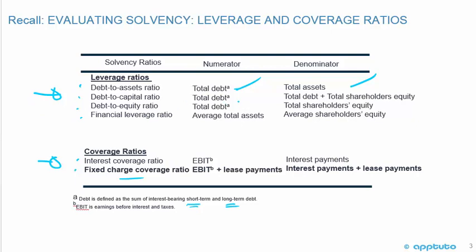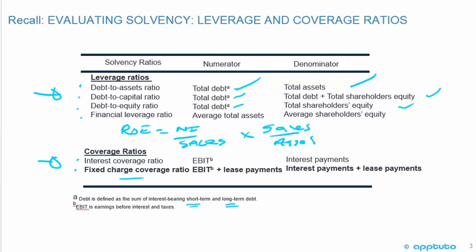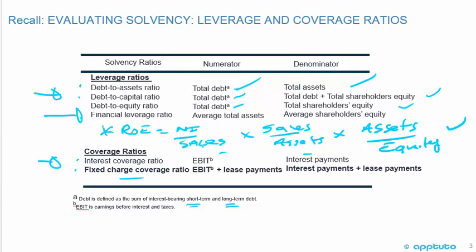For debt-to-capital, the numerator is total debt and the denominator is total debt plus total shareholders' equity. Debt-to-equity is simply total debt divided by total shareholders' equity. The financial leverage ratio should be familiar from the DuPont analysis: average total assets over average shareholders' equity. In the extended DuPont, return on equity equals net income over sales, times sales over assets, times assets over equity — where assets over equity is the leverage multiplier.